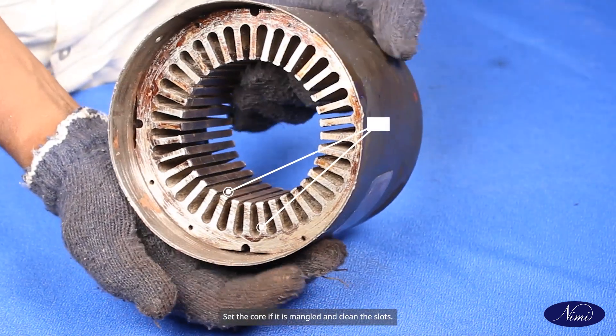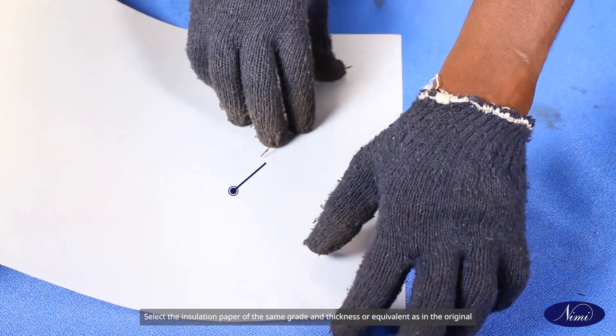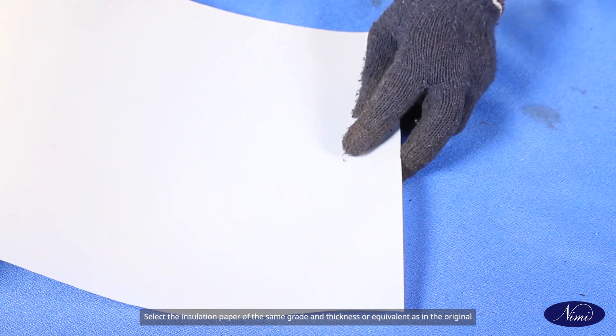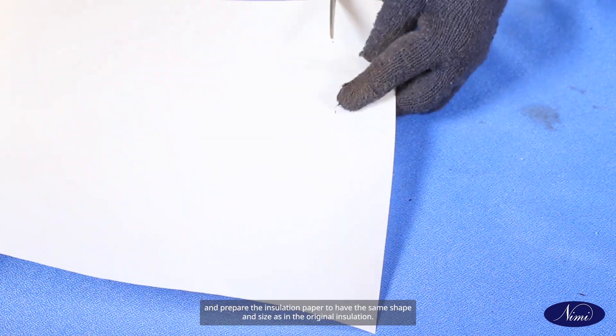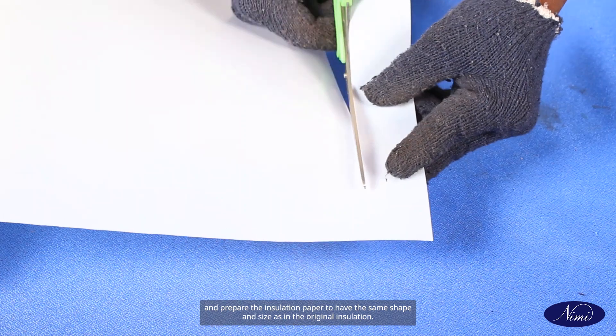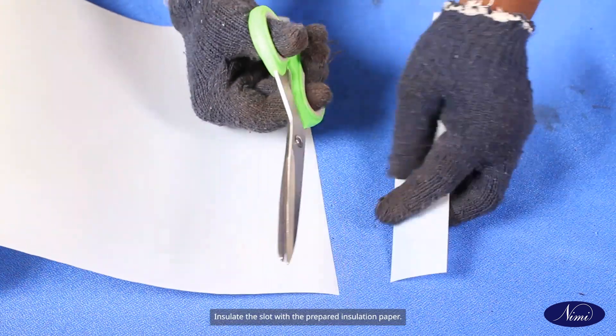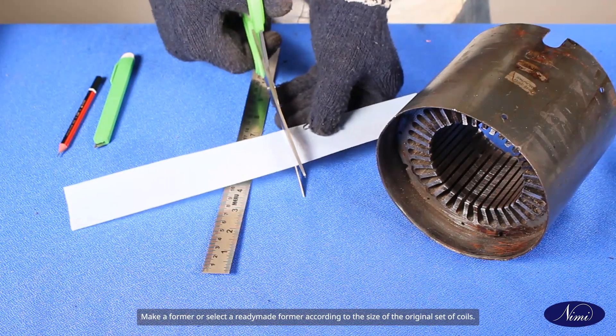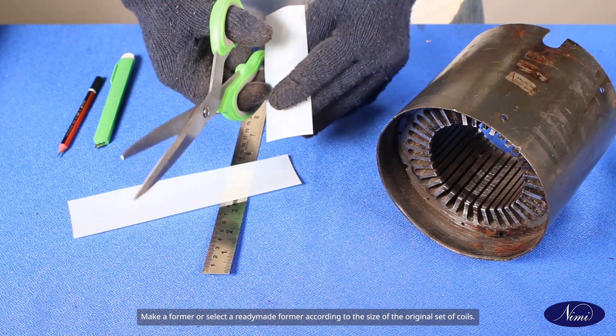Select the insulation paper of the same grade and thickness or equivalent as in the original and prepare the insulation paper to add the same shape and size as in the original insulation. Insulate the slot with the prepared insulation paper.